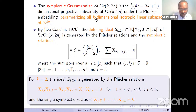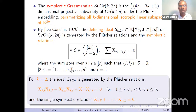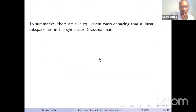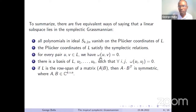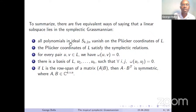I have a question from Dr. Isaac Owusu. Yes, I'm making the assumption that n̄ is greater than n. The way they appear: 1 to n, and then 1̄ to n̄ in increasing order. From what we have seen, we have five equivalent ways of saying that a linear subspace lies in the symplectic Grassmannian.